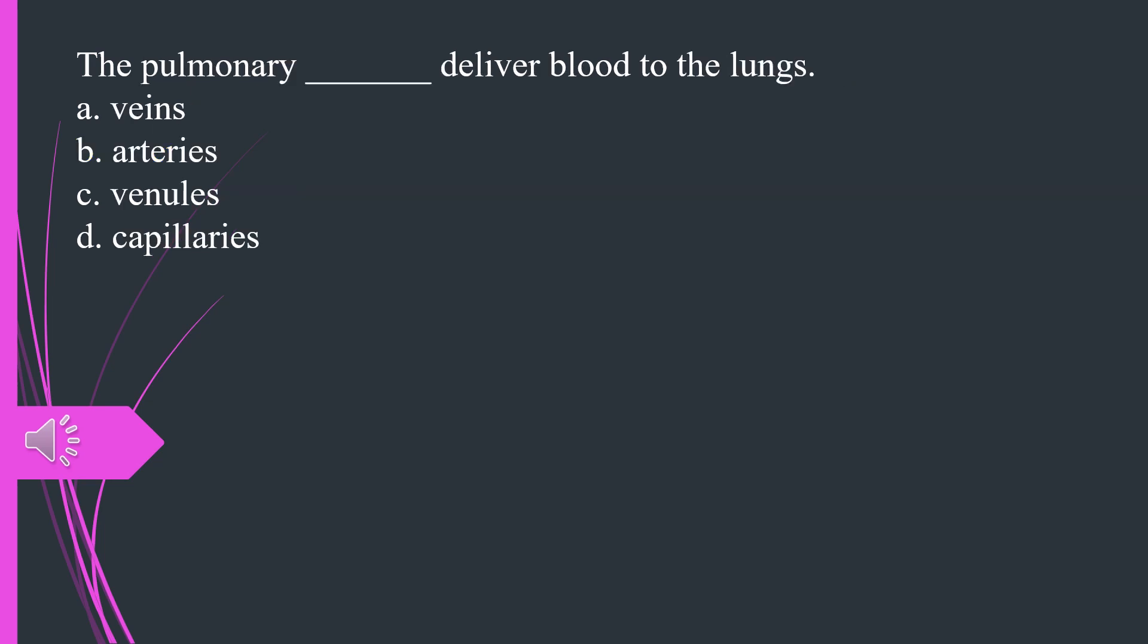What pulmonary vessels deliver blood to the lungs. A. Veins B. Arteries C. Venules D. Capillaries. The answer is B, arteries.